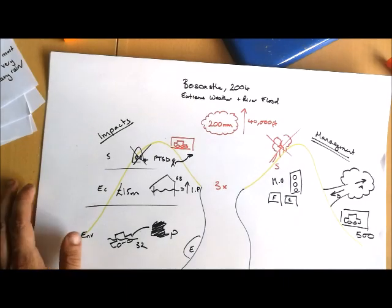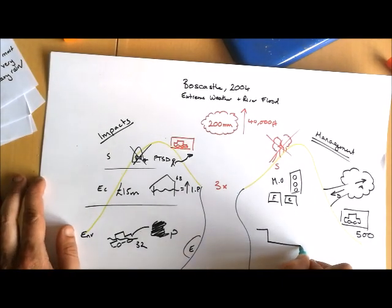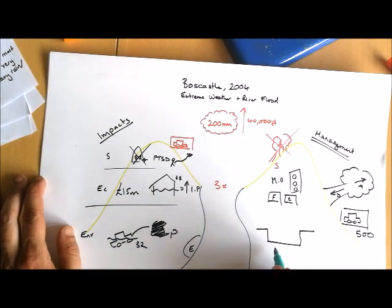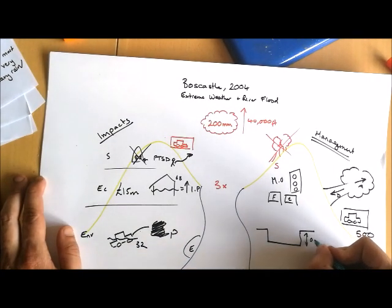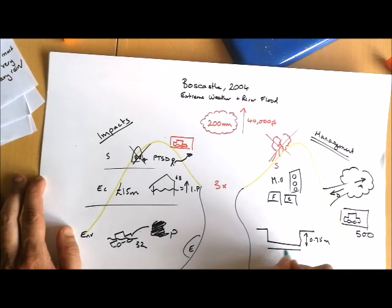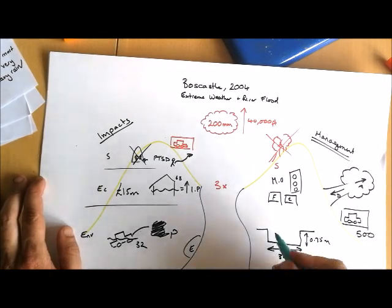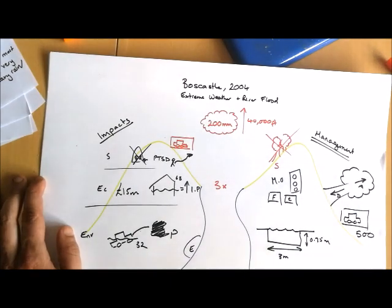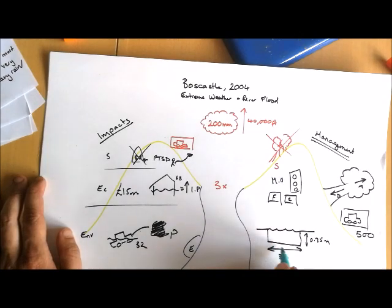One of the biggest things that they did was to deepen and widen the river. They deepened it by around 0.75 meters and widened it by 3 meters. The idea here would be that they would increase the channel's capacity allowing it to hold more discharge without the risk of flooding. They also did this in a highly effective way because there were major concerns that it would create an unnatural look to the river. So what they did was they used reclaimed stones from buildings that had been destroyed and from the local area to build these new deeper and wider banks so that it kept that attractive appearance which was so important for Boscastle to get its tourists back.